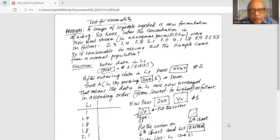2.3, 1.4, 1.8, 2.1, 1.0, 4.1, 1.8, 2.9, 2.5, and 2.7. Is it reasonable to assume that the sample came from a normal population? We got to test it out.